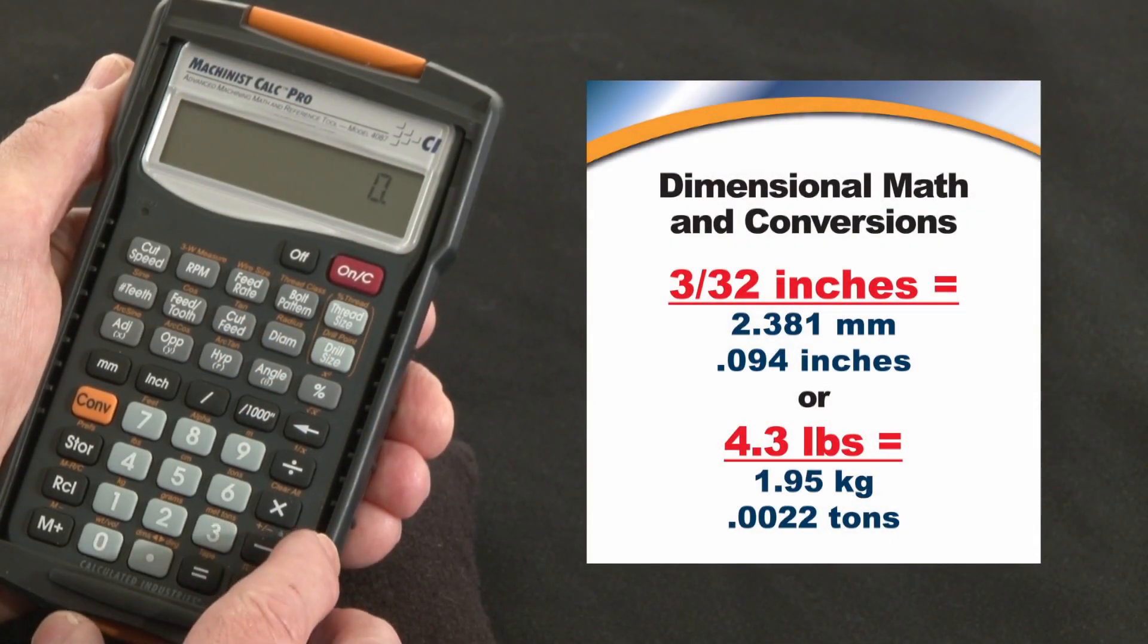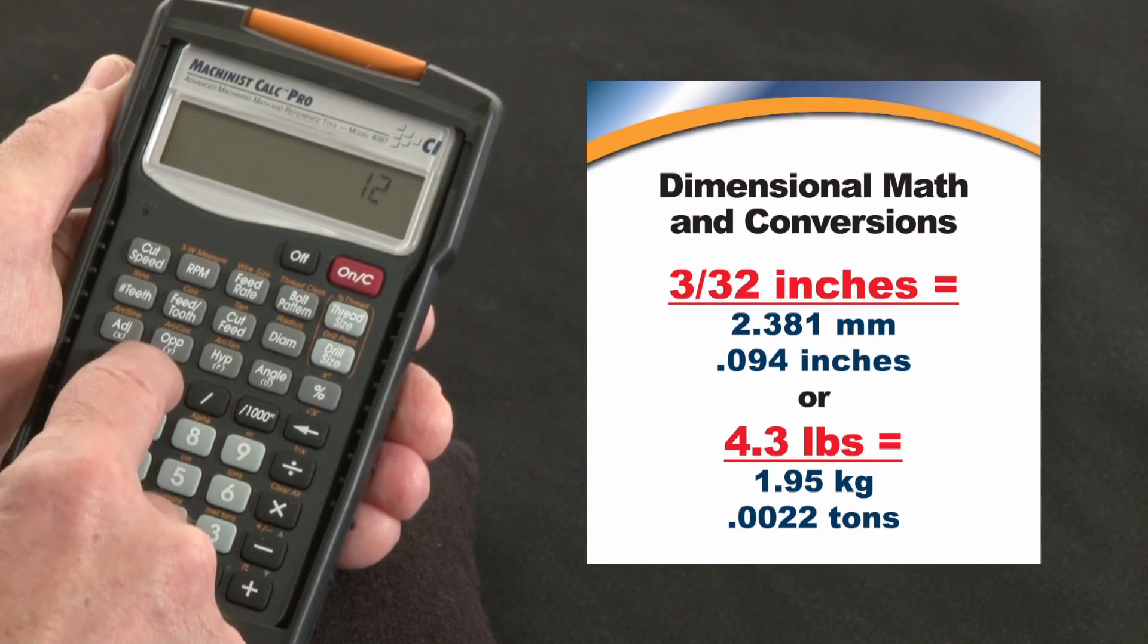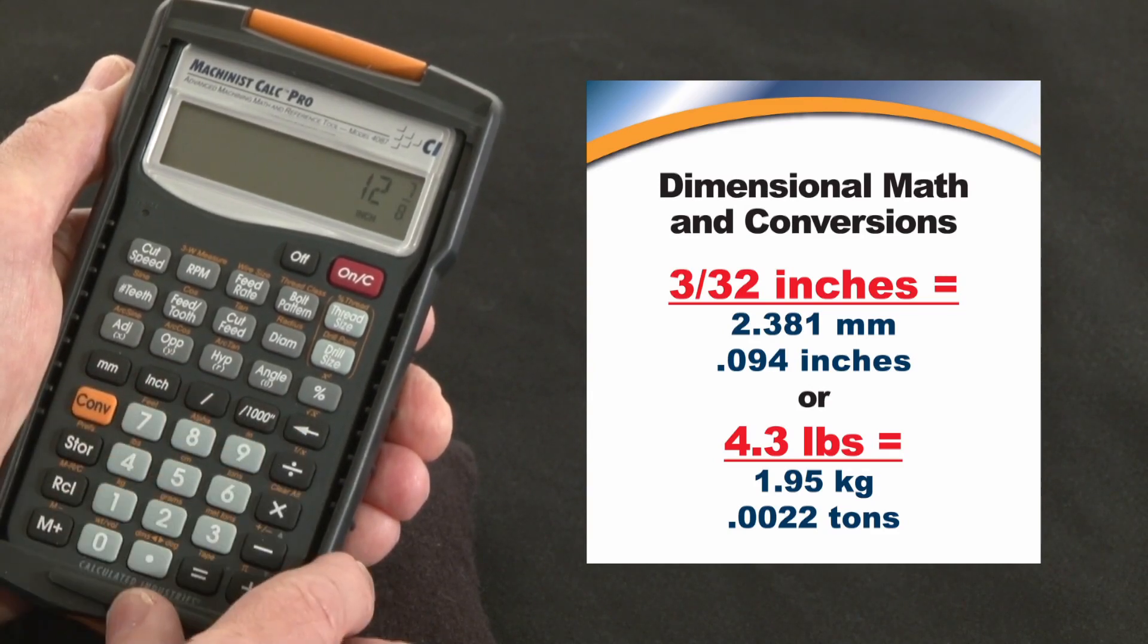Now let me show you how to do dimensional math on the Machines Calc Pro. You put dimensions in pretty much the way you say them. For instance, 12 inches, 7/8, just the way you write a fraction.